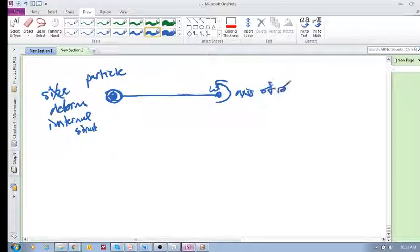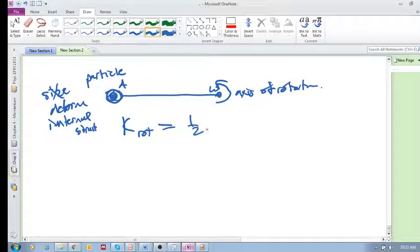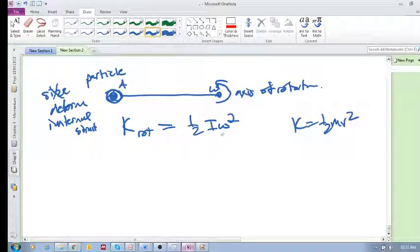And so, for example, if we said what is the rotational kinetic energy of this particle, it was half I omega squared. Remember, the linear translational kinetic energy is half mv squared, and so this is the rotational equivalent. But then your rotational inertia was given by mr squared.